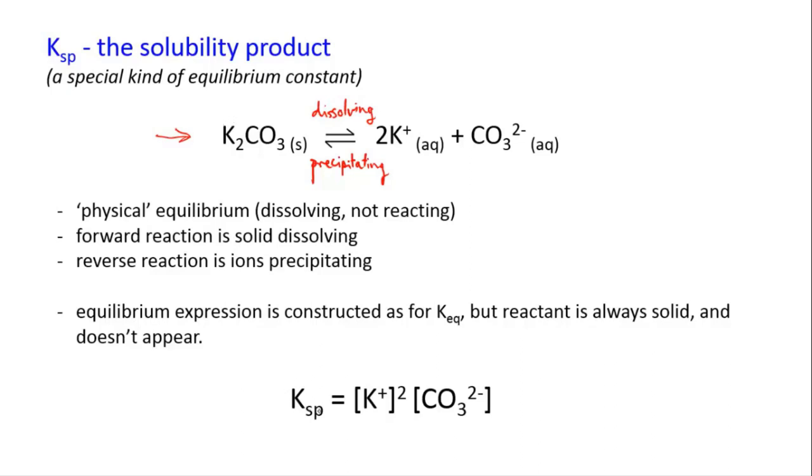For this particular one, we've got Ksp - solubility product - instead of Keq. It's exactly the same thing, we're just giving it a different name to indicate that it's this particular kind of equilibrium. So we've got Ksp equals products over reactants. Our products are the potassium ion, which has a stoichiometric coefficient of two, so we raise it to the power of two, and the carbonate ion. Our reactants are the solid, and so they get ignored. That's our equilibrium expression.